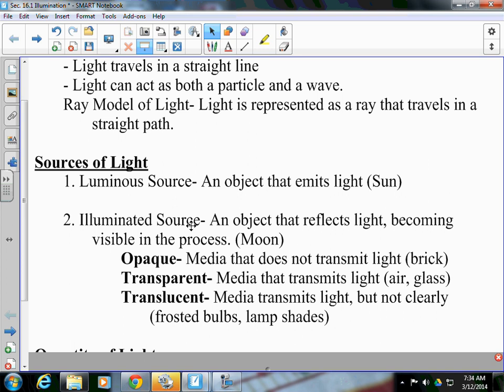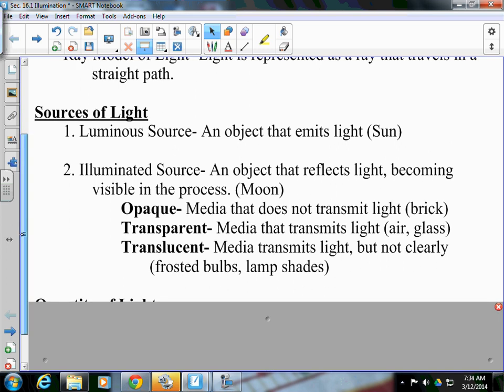Translucent, a medium that transmits light but not clearly. Frosted bulbs, lamp shades, those really thick glass tiles that you might see put over windows in bathrooms or anywhere else where it lets light in, but you can't see through the actual window.